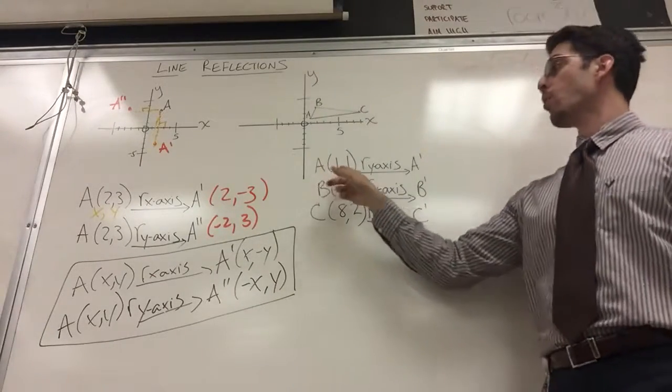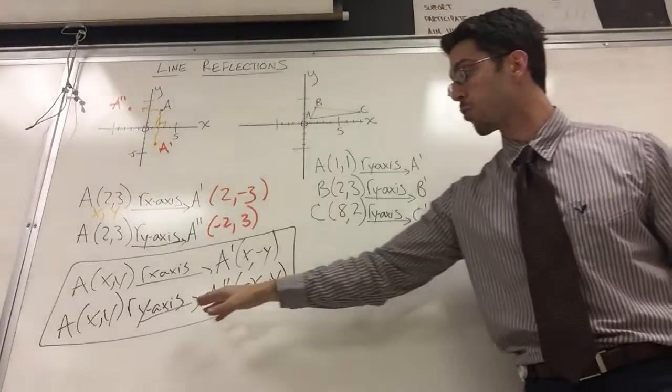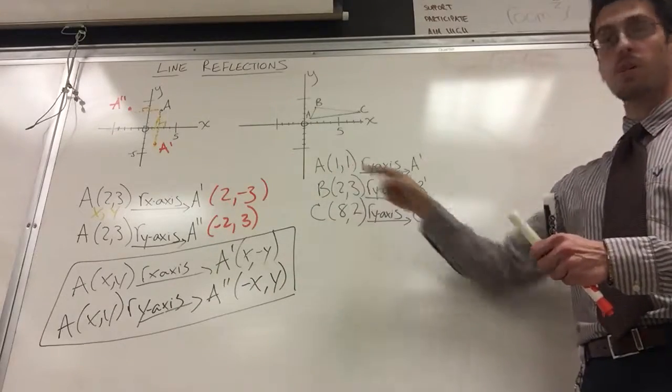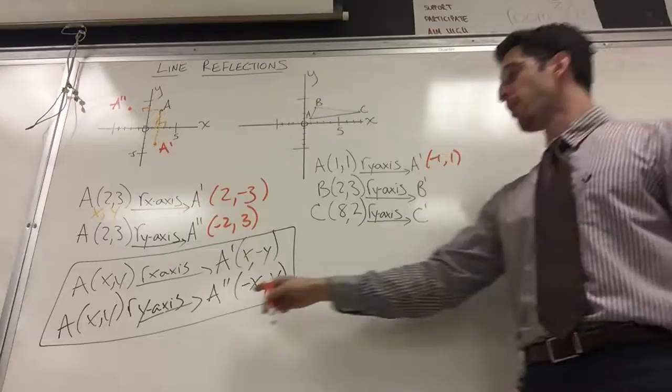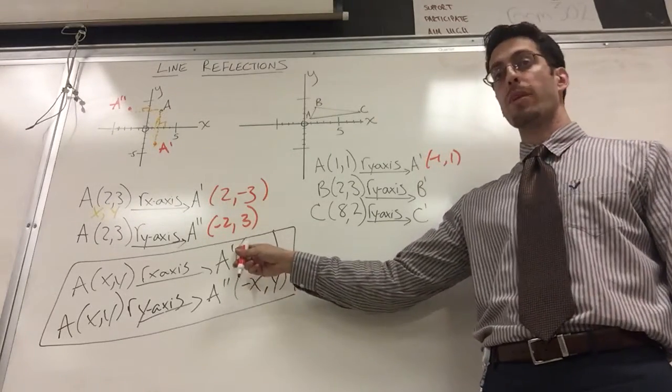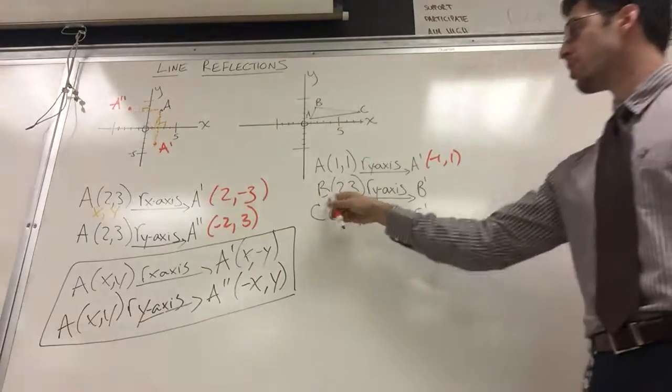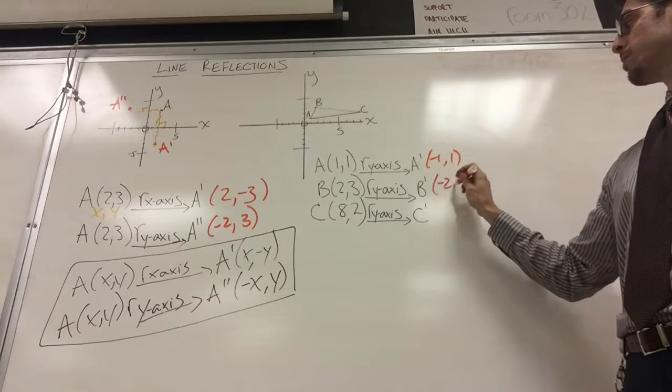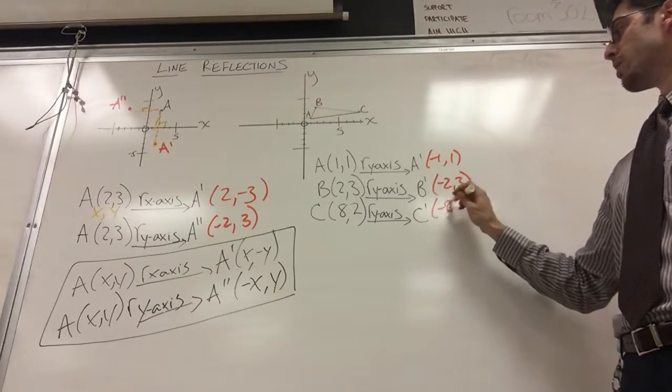So if I'm taking one, one, which is point A, and I want to reflect it in the y-axis, I go to my rule for y-axis and A prime is going to be negative one, one. But Professor Noy, you said it's a double prime. I only said it was a double prime because I did A prime already. Here, since I'm starting from fresh, I can just call it A prime, which means the new A. Where's the new B? Negative two, three. Where's the new C? Negative eight, two.